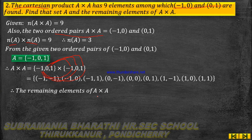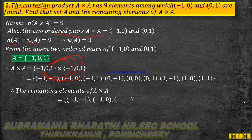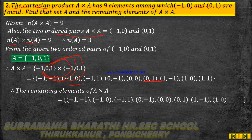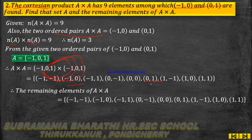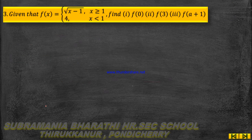Therefore, the remaining elements of A×A — excluding the already given elements (-1, 0) and (0, 1) — are: (-1,-1), (-1,1), (0,-1), (0,0), (1,-1), (1,0), (1,1).